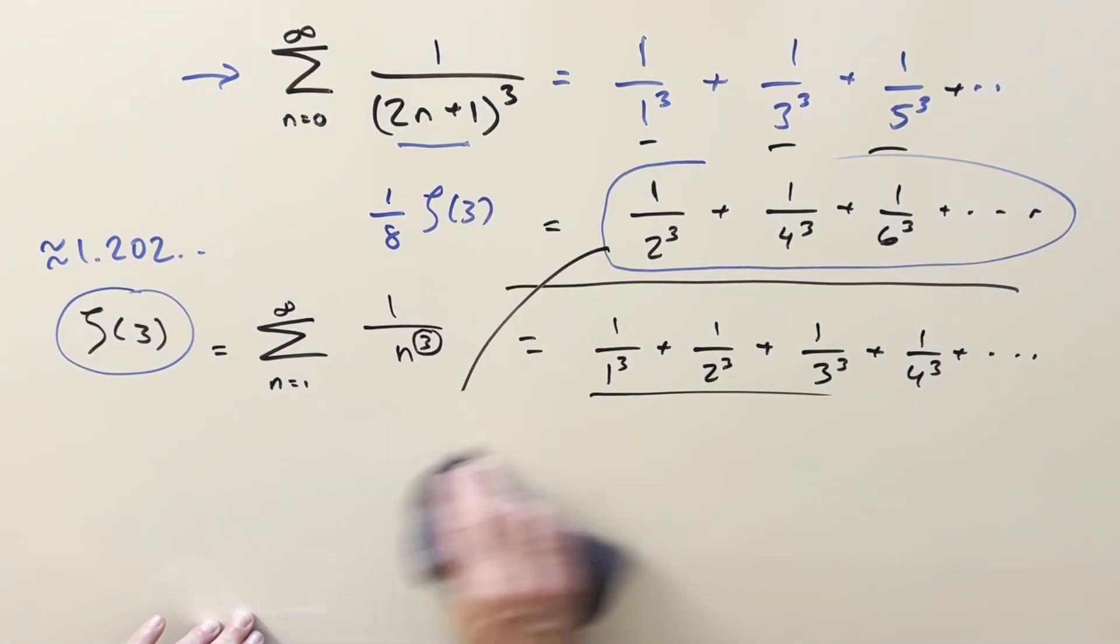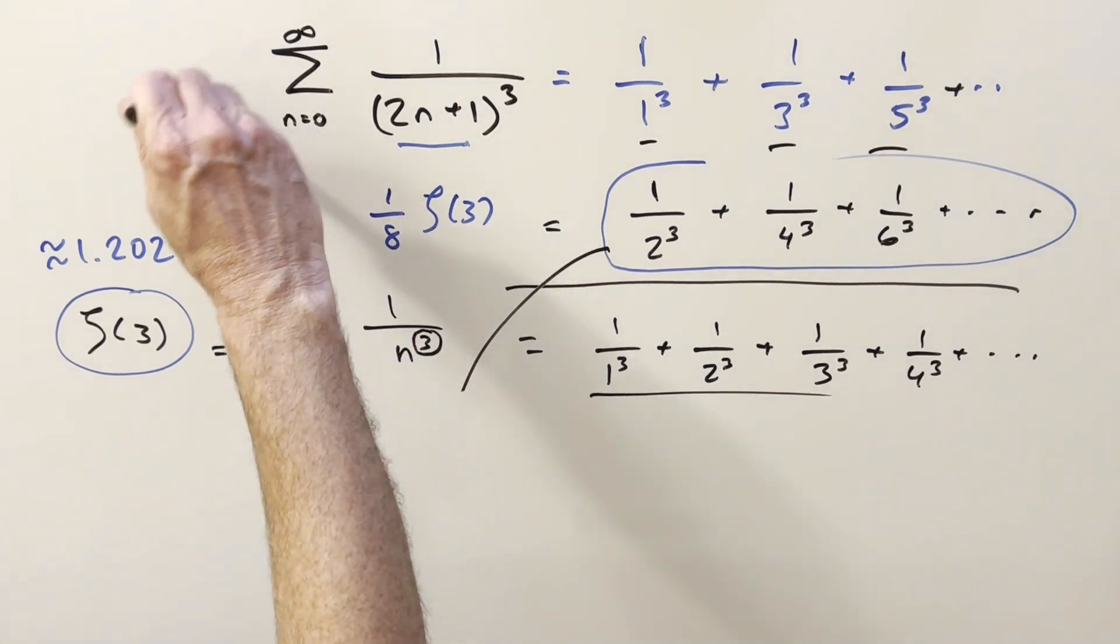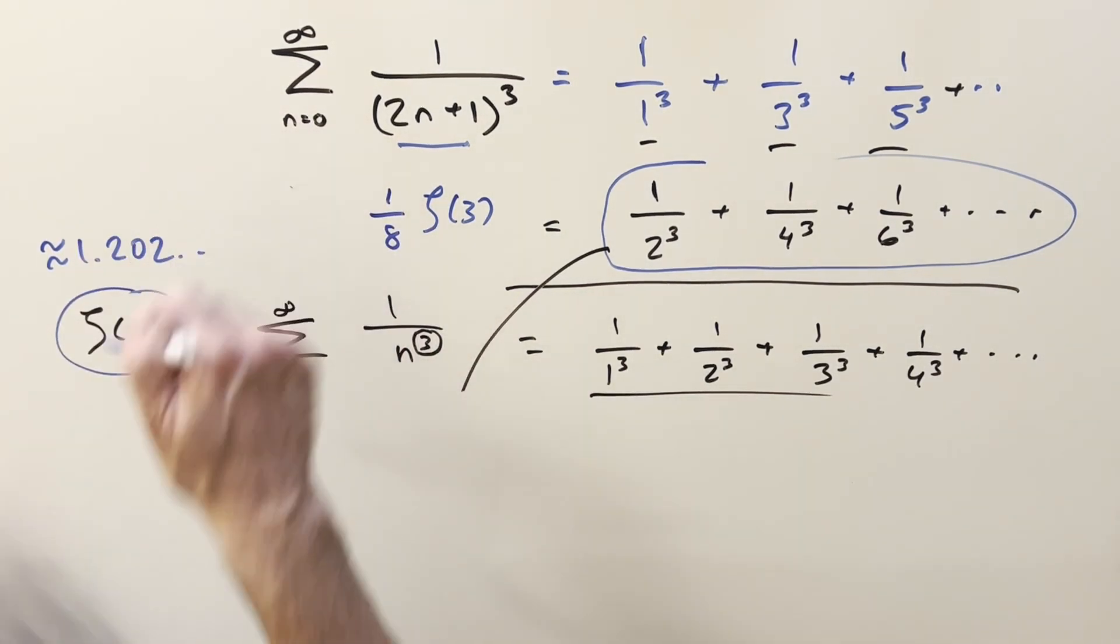From this, we can set up our equation. Let's label our goal, the first sum of odd terms, as S.